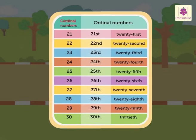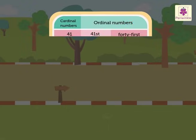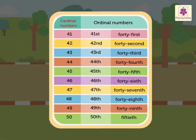Here are the cardinal numbers 21 to 30 and their corresponding ordinal numbers 21st to 30th. The next table has the cardinal numbers 31 to 40. And lastly, let us see the cardinal numbers 41 to 50 and their corresponding ordinal numbers 41st to 50th.